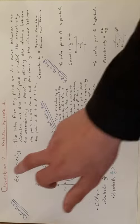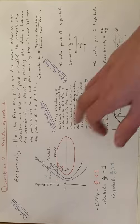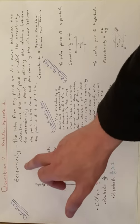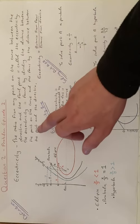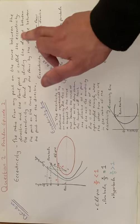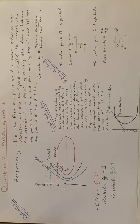So here I will be going through question two, problem episode two. First, I have my definition of eccentricity. The ratio from any point on a curve between the directrix and the focal point is called the eccentricity. The eccentricity is found by dividing the distance between the point and the focus by the distance between the point and the directrix.